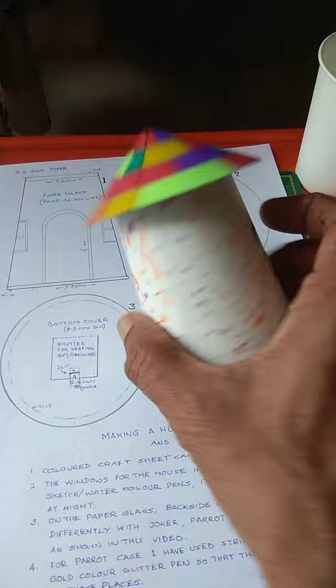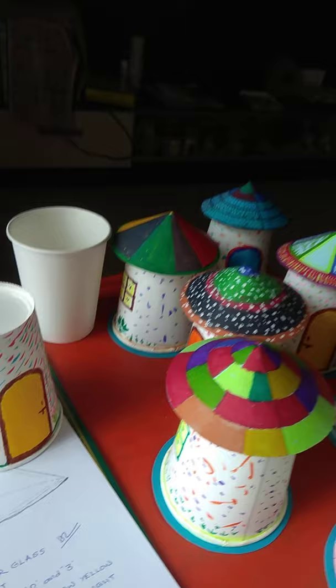On the paper glass back side, this we have. At the back you can write anything, here at the back you can type it like this or print it like this in a different way.